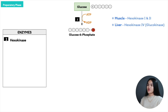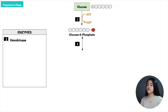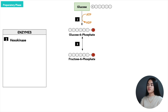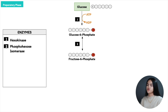From glucose-6-phosphate, the second step is a reversible isomerization reaction. Glucose-6-phosphate is converted to fructose-6-phosphate. In this step, the carbonyl group is moved to carbon 2, and the enzyme catalyzing this reaction is phosphohexose isomerase.